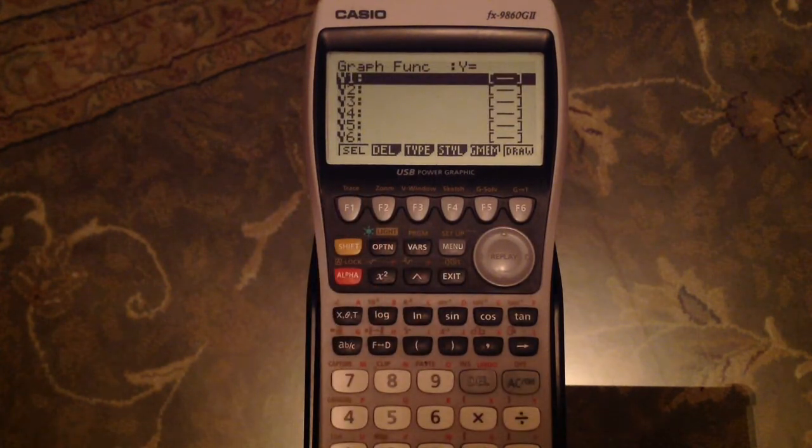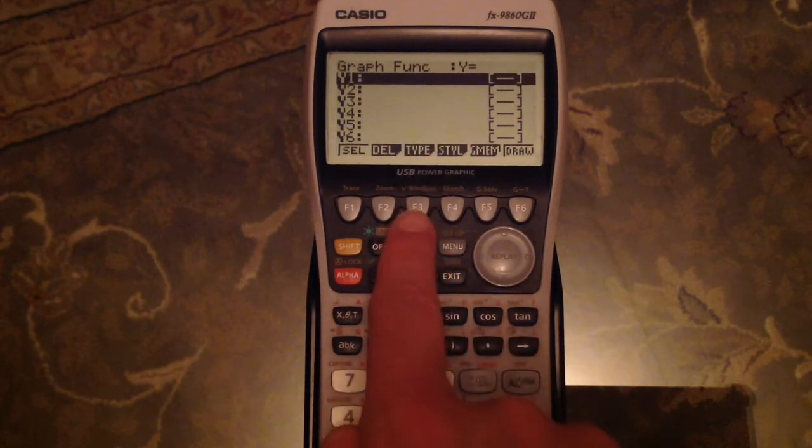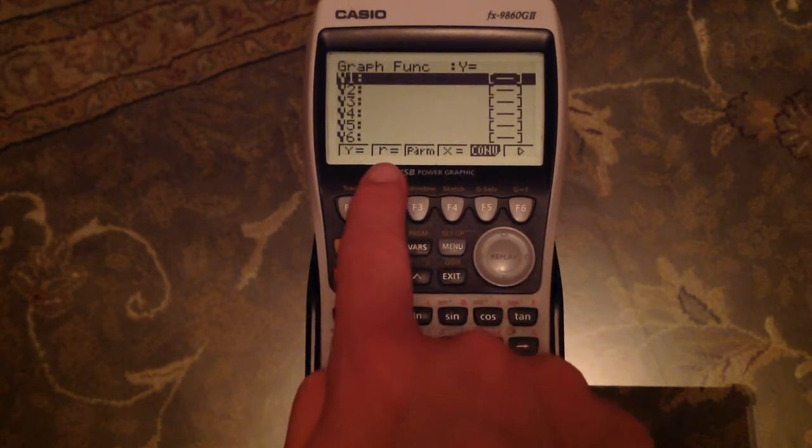Now we need to change the type of graph, so we press the type button here, which is corresponding to F3, click that, and we want polar, so that's r equals.